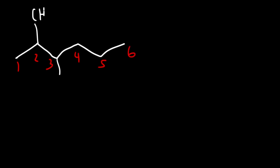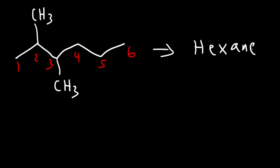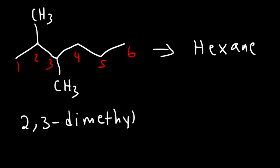We have a methyl group on carbon two and on carbon three. So how can we name it? The parent chain is hexane because it has six carbons. There are two methyl groups, so you need to write 2,3-dimethylhexane. Di means two, tri means three, tetra means four. So it's dimethylhexane.